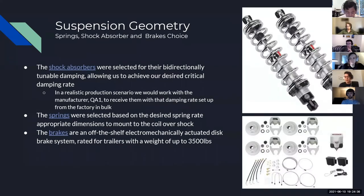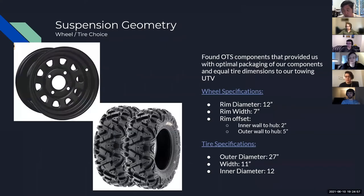We used some off-the-shelf components, specifically the shock absorbers — a coilover style where the spring coils around the shock — in addition to the braking system. The shock absorbers were specced based on values calculated for the required mass-spring system, and the brakes were specced based on the mass of the trailer. We also used off-the-shelf wheels and tires specified to be similar to the UTV that would be our ideal towing vehicle.